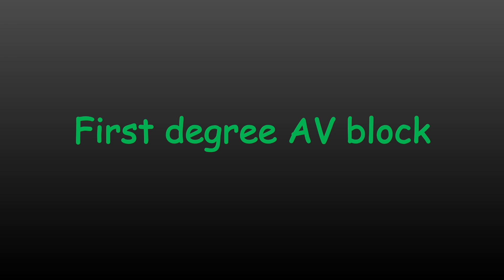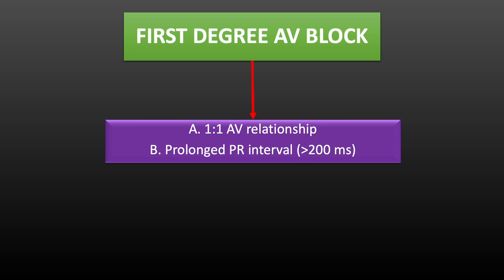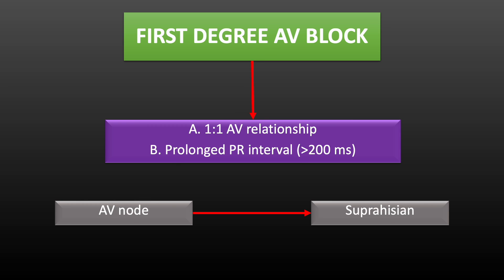1st degree AV block. These are the criteria for diagnosis of 1st degree AV block. There should be a 1-to-1 AV relationship maintained throughout — that is, each P wave should be followed by a QRS complex. The only problem in 1st degree AV block is prolonged PR interval. The normal PR interval is between 120 to 200 ms, so any value more than 200 ms is considered abnormal. This block occurs because of conduction delay at the level of AV node, hence this is a suprahisian type of AV block. 1st degree AV block is common and often doesn't require any treatment.